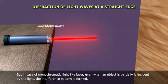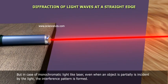But in case of monochromatic light like laser, even when an object is partially incident by the light, the interference pattern is formed.